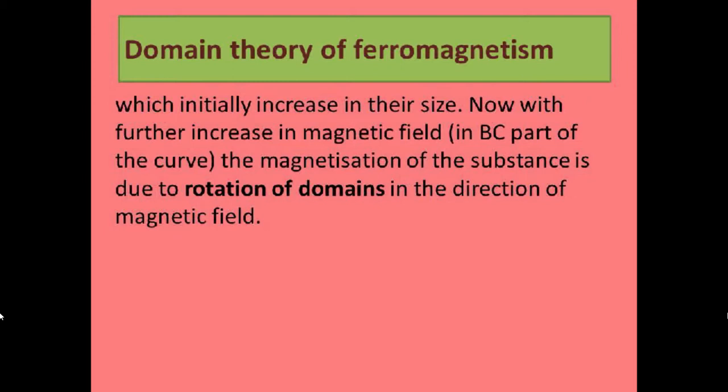With further increase in the magnetic field, in the BC part, the magnetization of the substance is due to rotation of the domain — the domains rotate in the direction of the magnetic field, causing magnetization. After this stage, it results in permanent magnetization.